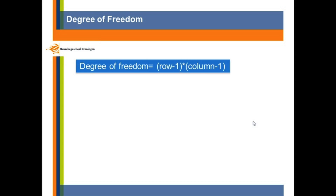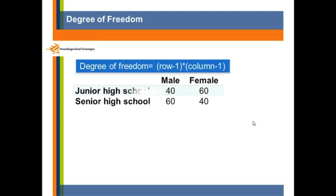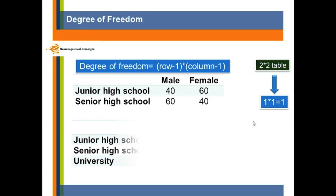After we have done the contingency table, we know how to get our degree of freedom for the chi-square. It comes from the number of rows minus 1, times the number of columns minus 1. Going back to our previous example, this 2 by 2 table, the degree of freedom will be 1 times 1, so that will be 1.